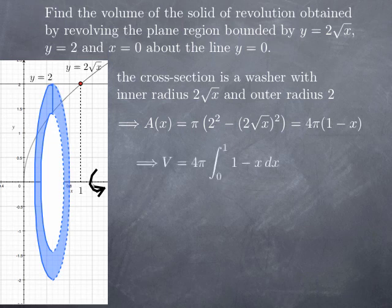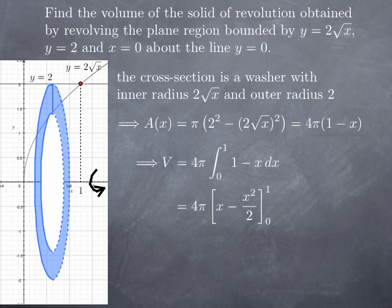The volume of the resulting solid of revolution is the integral of 4π(1 − x) from 0 to 1, since the range of x values is from 0 to 1. An antiderivative of 1 − x is x − x²/2. Evaluating between 0 and 1: the value at 1 is 1 − 1/2 = 1/2, and the value at 0 is 0. So we get 4π × 1/2 = 2π.